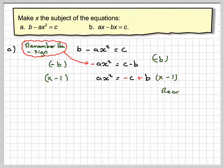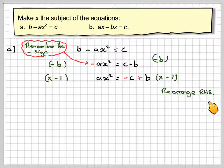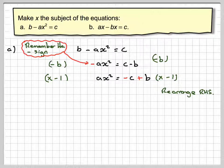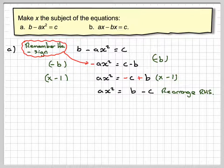Plus b. Then we'll rearrange the right hand side to make it b minus c. So we've got ax squared is equal to b minus c.